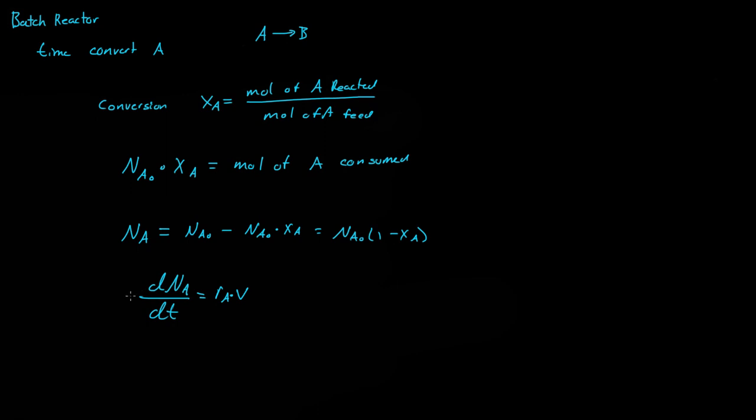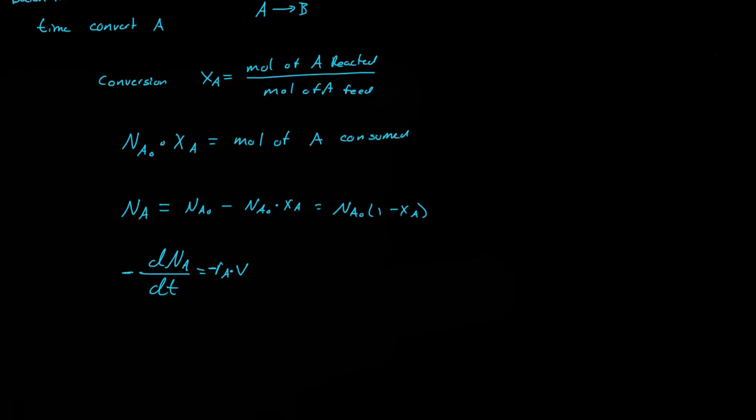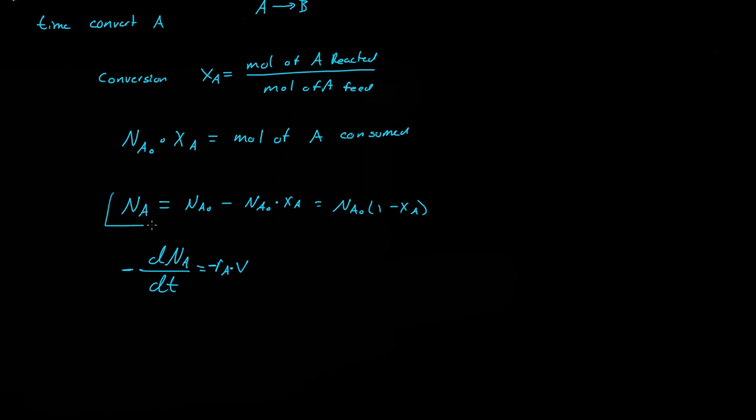Now, we're going to multiply both by negative 1, and that's just to allow this to be a positive number. So if we do that, and we then differentiate this equation, we get dNA over dt is equal to, well this is a constant, so that's 0.